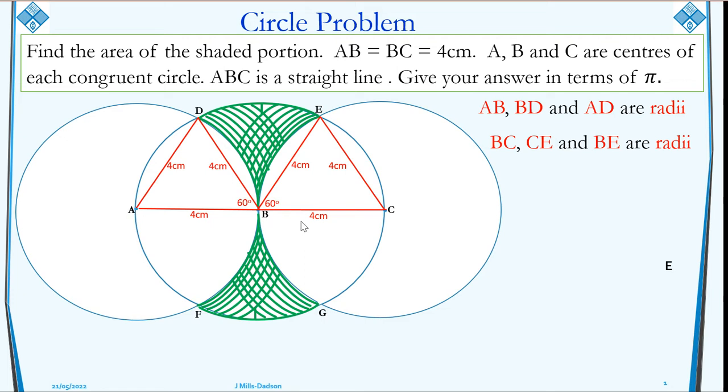And because ABC is a straight line, then this angle must also be 60 because angles on a straight line equal 180. Knowing this angle as 60, we can now confirm this line has to be 4 cm because this is also an equilateral triangle.